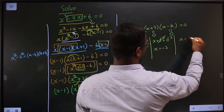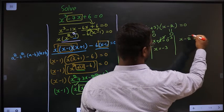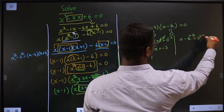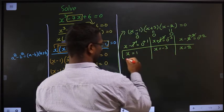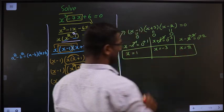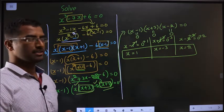If x minus 2 equal to 0, add plus 2 on both sides. So this cancels out, x equal to 2. So these are the values of x for our given equation.